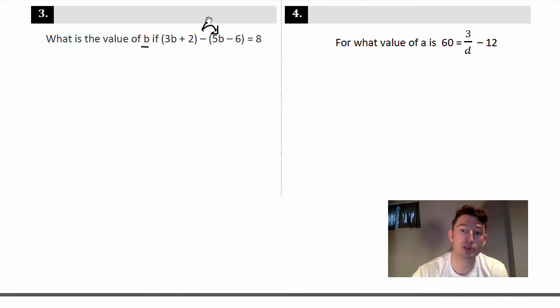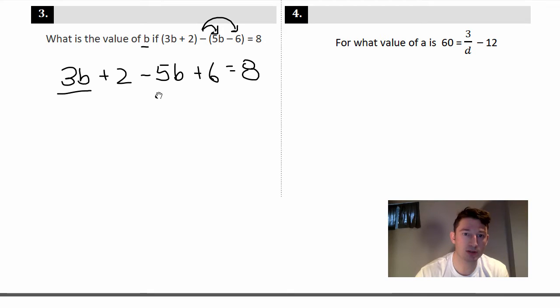So what I'll tell you is the tricky part is they're giving you parentheses really for no reason, so we're going to get rid of it and distribute that negative. We've got to distribute the negative into both. So I'll rewrite this: 3b + 2, that's minus 5b, and that's minus times a minus 6, plus 6, equals 8.